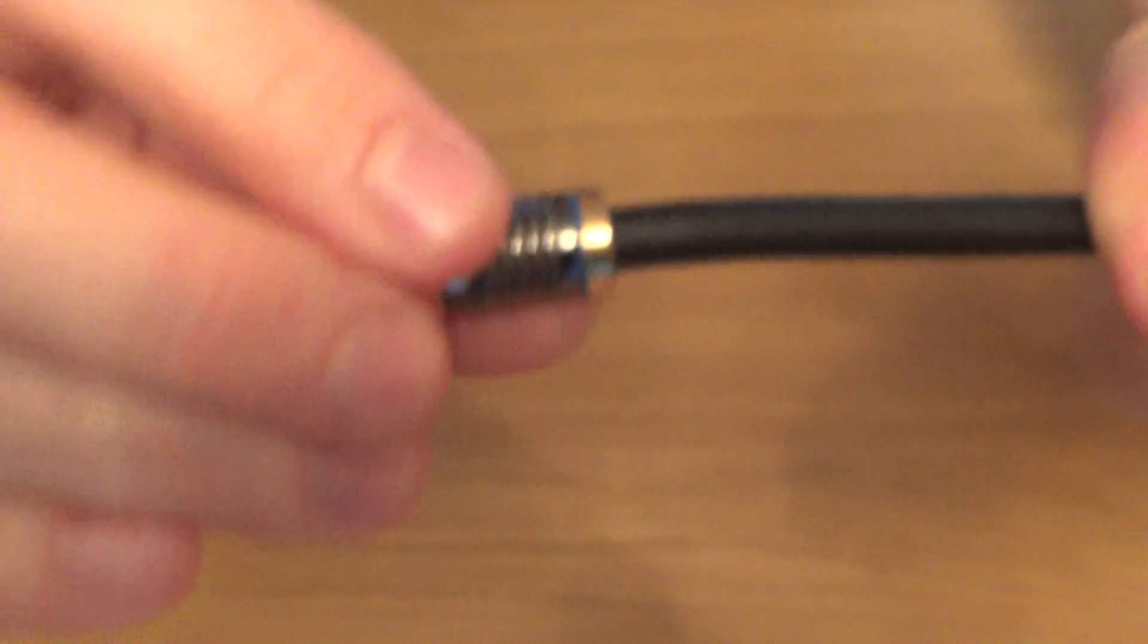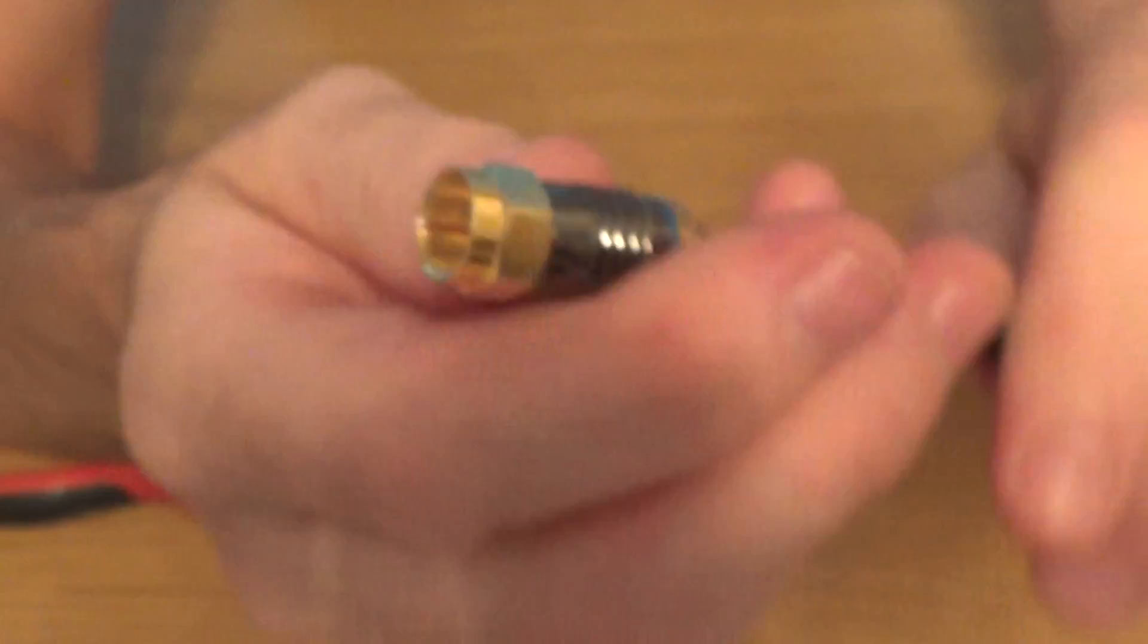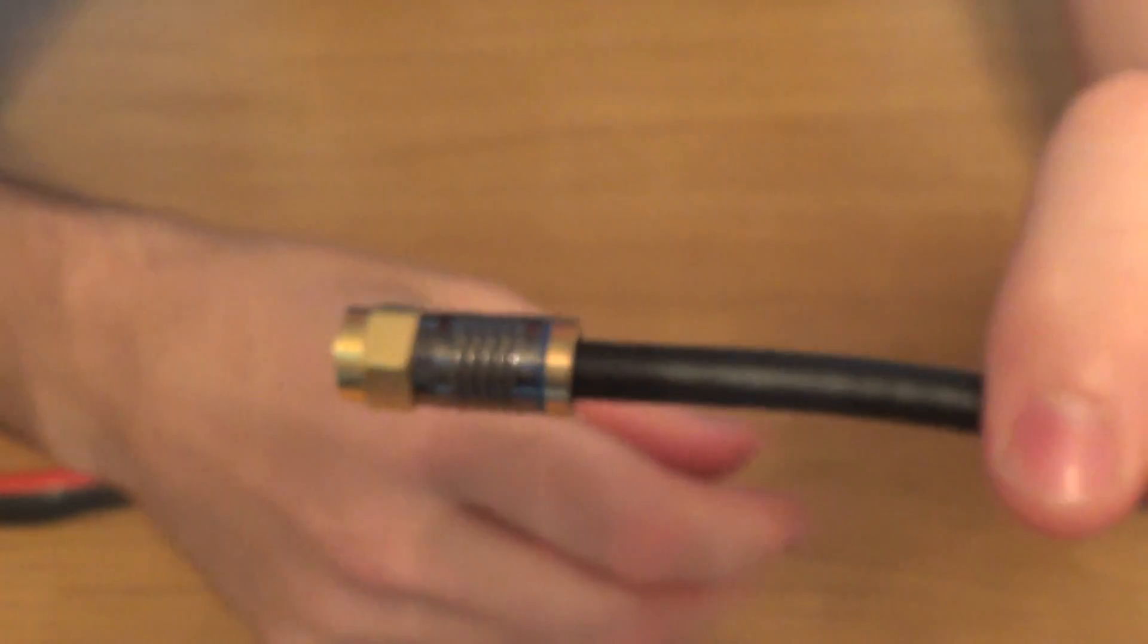So that's how you crimp on an F-type plug onto coaxial cable. Okay. Hope you enjoy. Take care. Bye now.